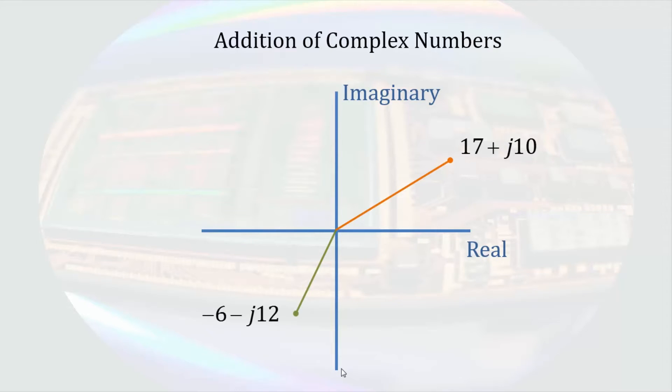and the green dot will represent negative 6 minus j12. The result is a red dot, which we arrive at by adding the real components of the two numbers, and the imaginary components of the two numbers separately. So 17 plus j10 minus 6 minus j12 gives us 11 minus j2.